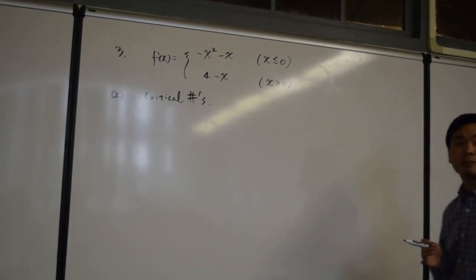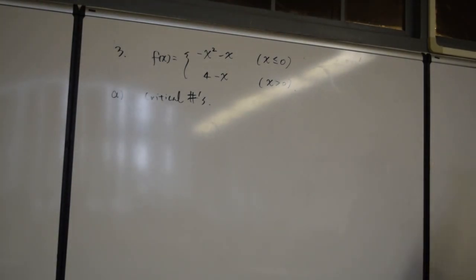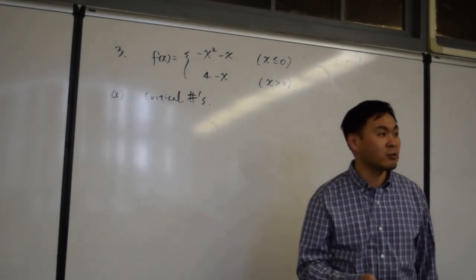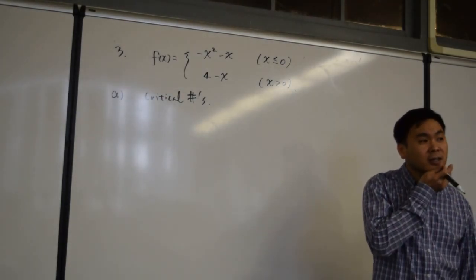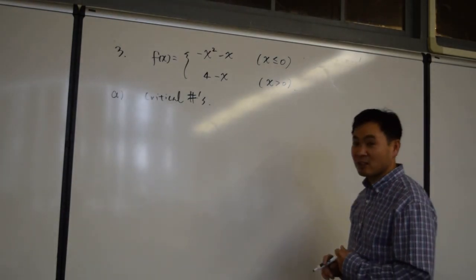What's the definition of a critical number? Where the derivative is equal to zero or where the derivative is undefined, and where the derivative does not exist.